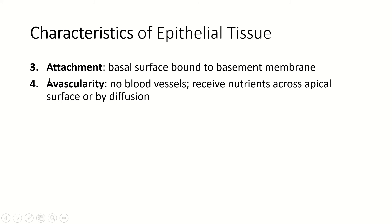Avascularity — 'a' meaning without, 'vascular' referring to blood vessels — so no blood vessels. Blood vessels go underneath the epithelium, deep to the epithelium, but the epithelial tissues themselves only receive nutrients by diffusion, osmosis, and sometimes active transport. Nutrients, water, and oxygen have to diffuse through the layers of epithelial tissue, which is one reason epithelial layers are very thin.